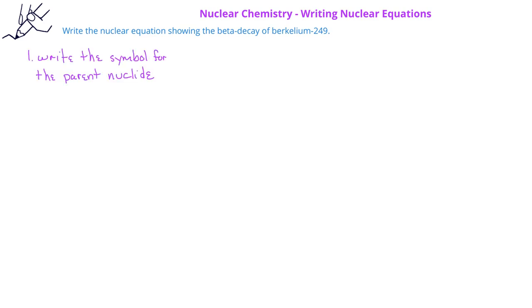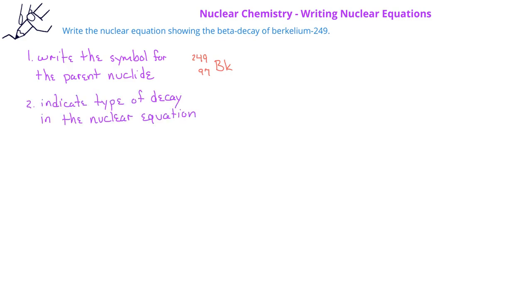In this problem, we are asked to write the nuclear equation for the beta decay of berkelium-249. We begin by writing the nuclide symbol for berkelium-249. The symbol for berkelium is Bk, and 249 is the mass number, which goes in the upper left corner. From the periodic table, berkelium has an atomic number of 97, which goes in the lower left corner. Since berkelium-249 undergoes beta decay, the nuclear equation will include a beta particle as a product, represented by the lowercase Greek letter beta.